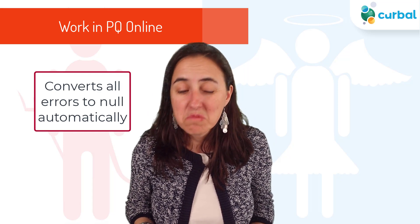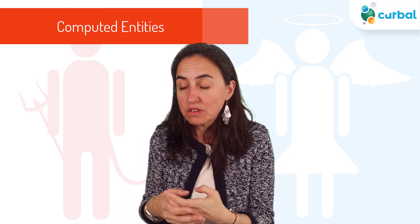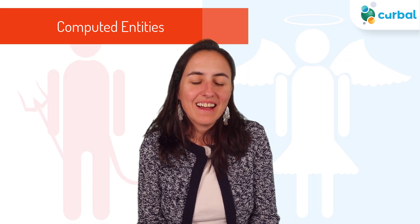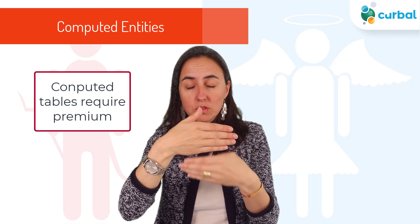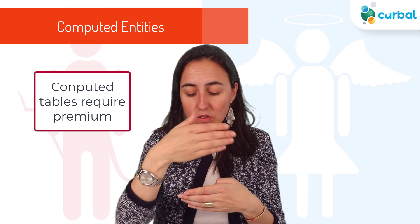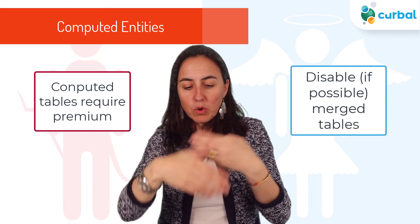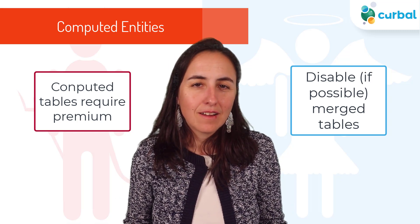Next thing — we're doing the steps, we're succeeding. We have two tables and we want to do a merge, which is actually a good use case for Dataflow. But if you load both tables into the Dataflow, it will say this is a computed entity and requires Premium. So you need to disable one of the merged queries for it to work. If you need both tables, you could load one, disable it, then load the other separately — there are ways to work around the Premium requirement.